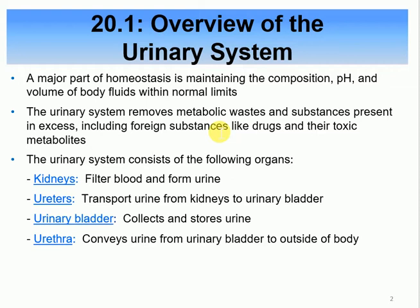For example, hydrogen — we need hydrogen, but if there's too much, we get rid of it. Even nutrients: if you have too much glucose, it will start to show up in the urine because it's in excess. So you get rid of whatever is not supposed to be there, whether it doesn't belong at all or is present in excess.